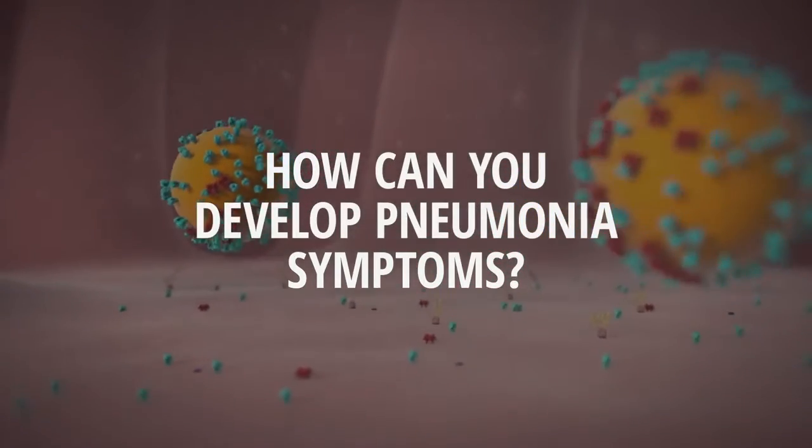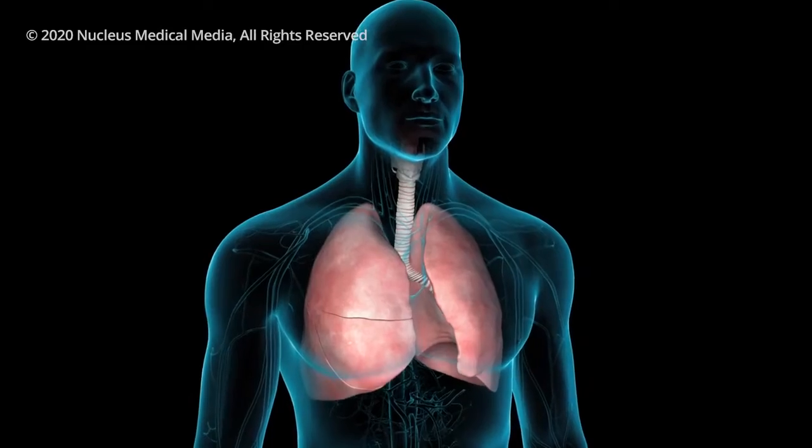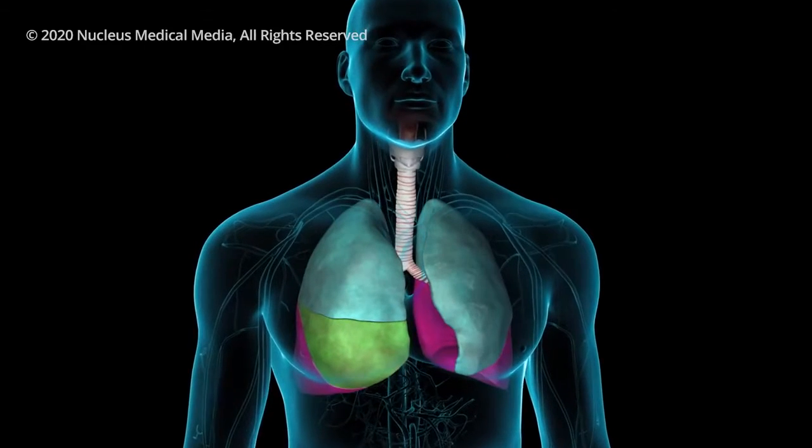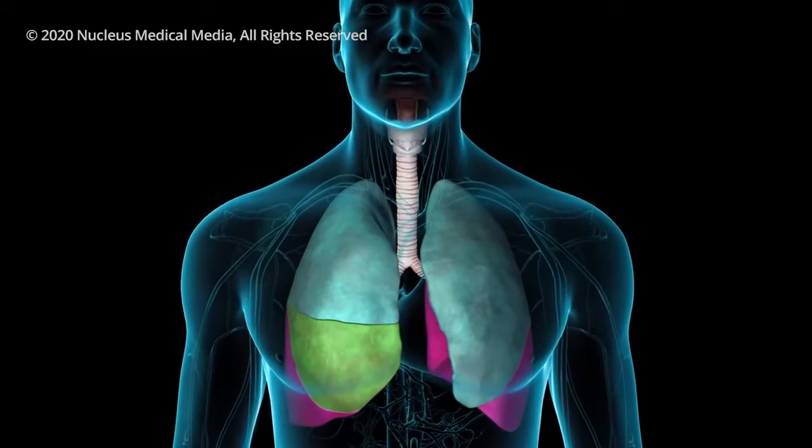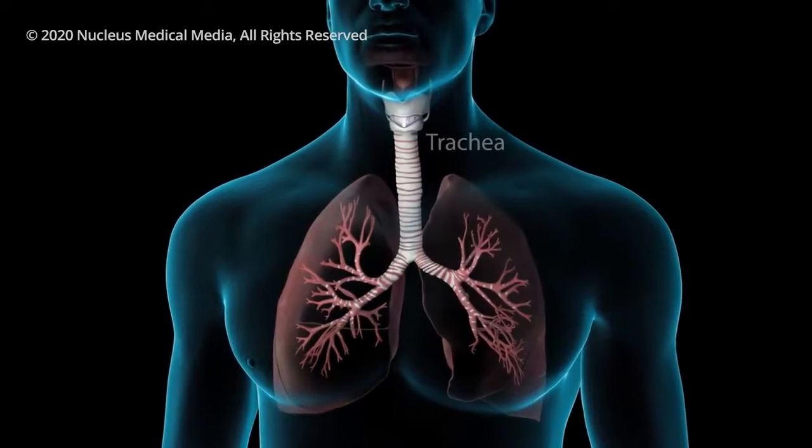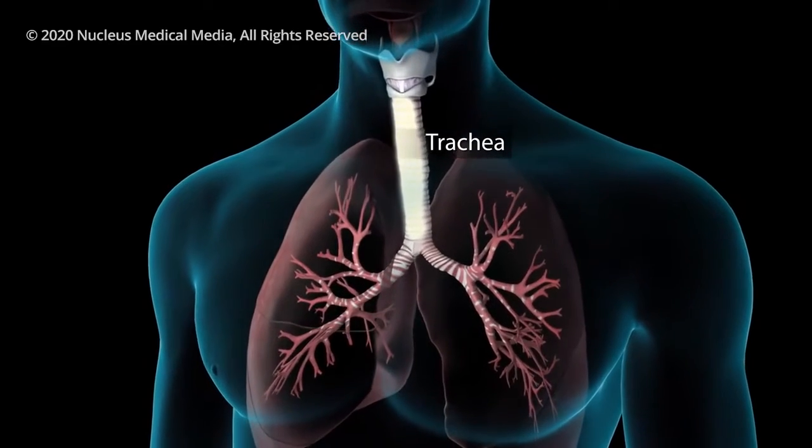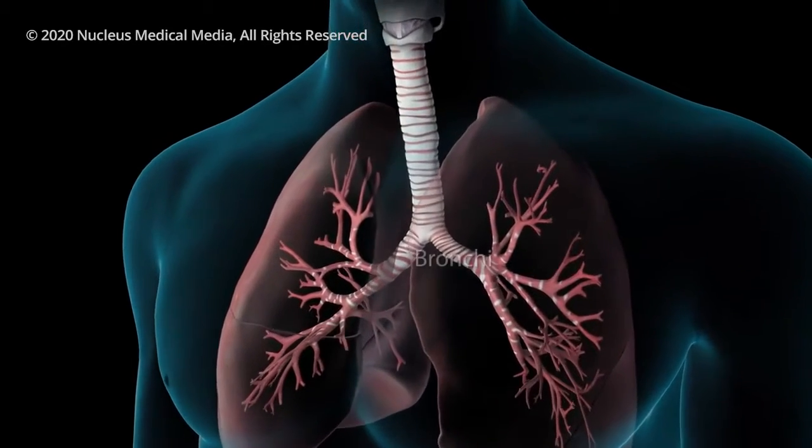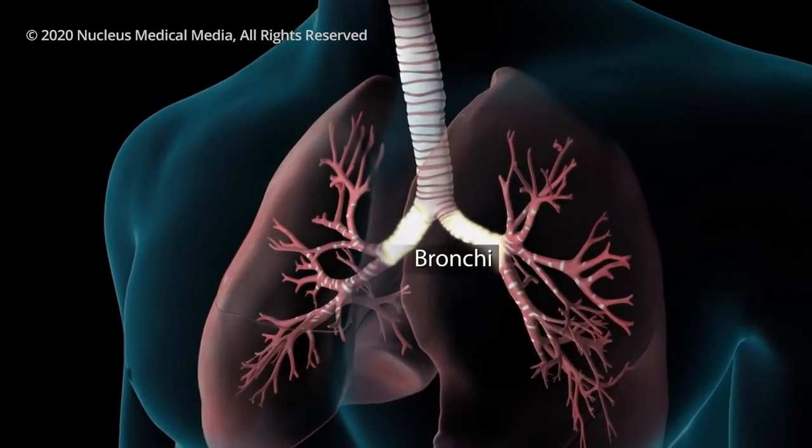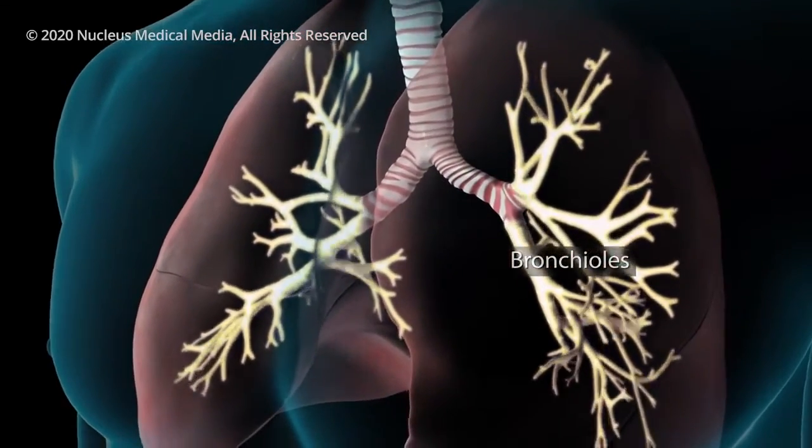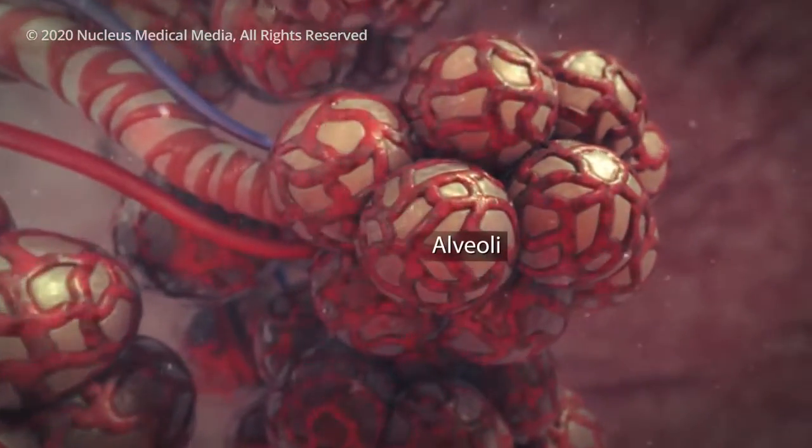How can you develop pneumonia symptoms? For this, we'll have to look into your lungs. Each lung has separate sections called lobes. Normally, as you breathe, air moves freely through your trachea or windpipe, then through large tubes called bronchi, through smaller tubes called bronchioles, and finally into tiny sacs called alveoli.